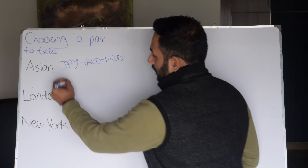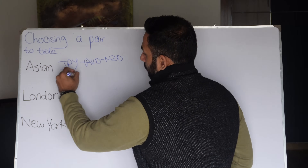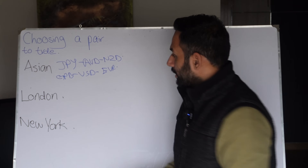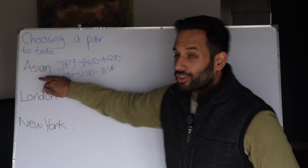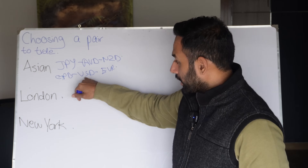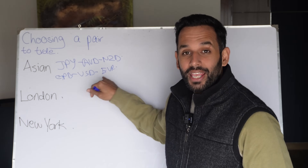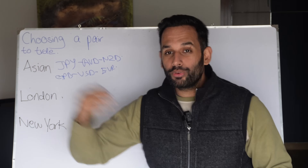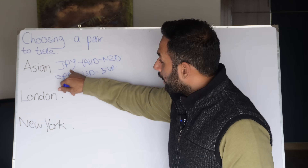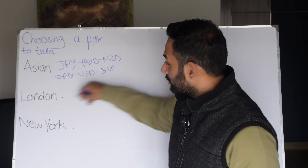Most of the time what you're going to find is that if you look at pound yen, USD yen, and euro yen in the Asian session, they all move the same way. But if you look at AUD/JPY, it's going to move a little bit more differently than the other yen pairs, because it's only dependent on one currency.